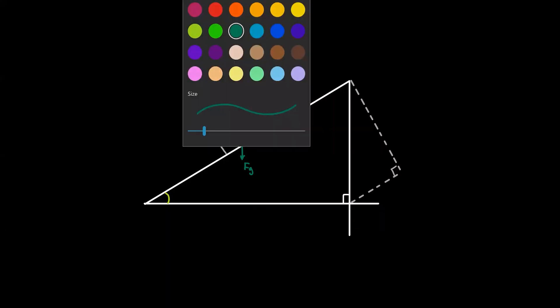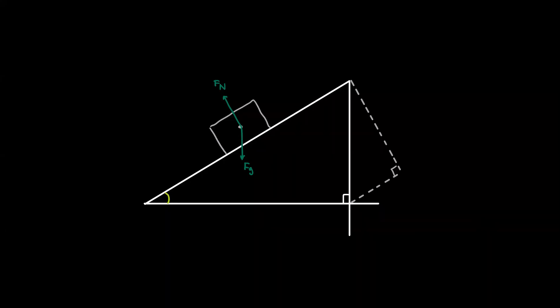In a normal physics problem, we would usually begin by defining a sign convention for a y-axis and an x-axis like so. This is sort of what we expect of our axes, but in problems that involve inclined planes, it's actually more convenient to tilt our axes so that we have an x-axis that is parallel to the surface of the incline and a y-axis that is perpendicular to it.